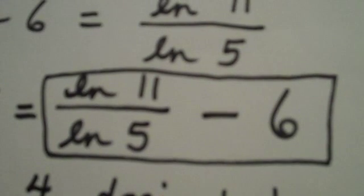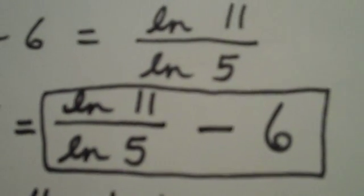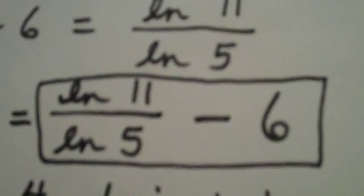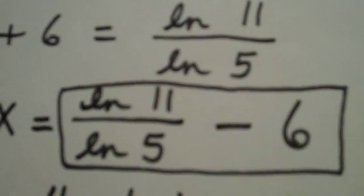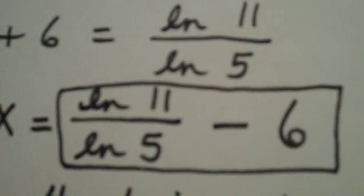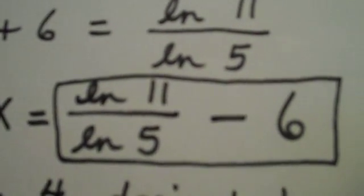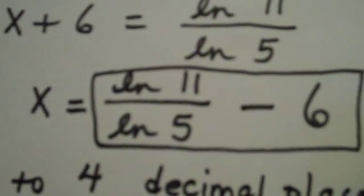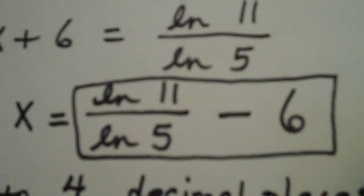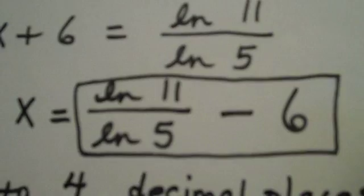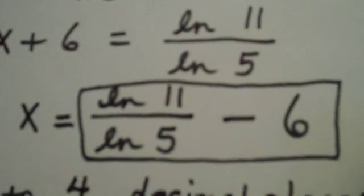I'm punching the natural log button, LN. I'm typing 11 and right paren to close it. Then I'm typing divided by, and then the LN button again. I'm typing 5, hitting right paren again, and I hit enter.